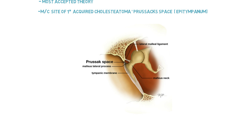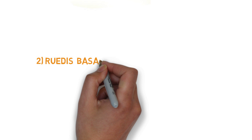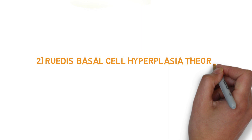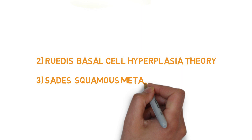The most common site of primary acquired cholesteatoma is Prussak's space. There are two other theories: Ruedi's basal cell hyperplasia theory and the squamous metaplasia theory. These theories are not widely accepted but are important from an examination point of view.